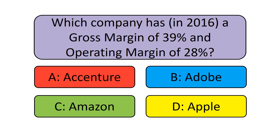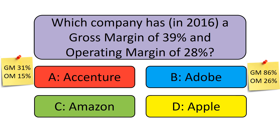In this video we have gone through the definitions and calculations for Gross Margin and Operating Margin. Accenture's Gross Margin is 31% of revenue and Operating Margin 15%. Adobe's Gross Margin is 86% and Operating Margin 26%.